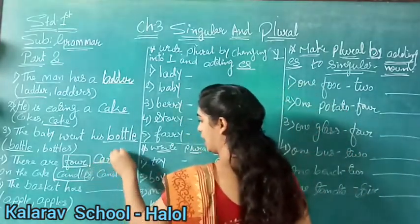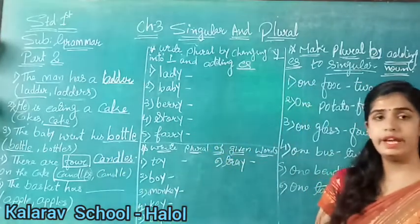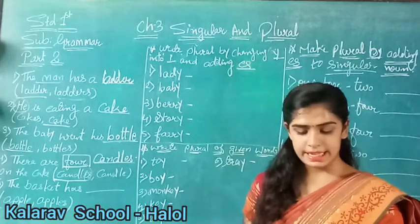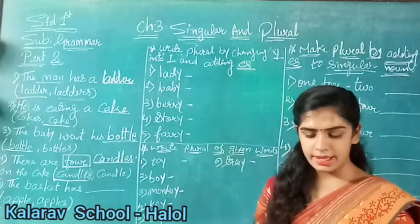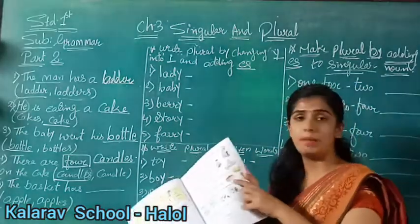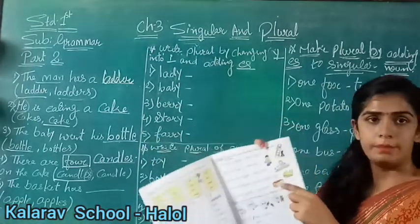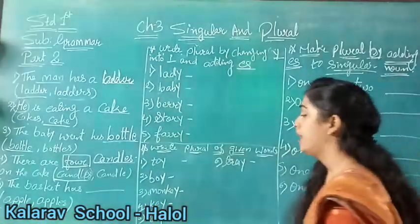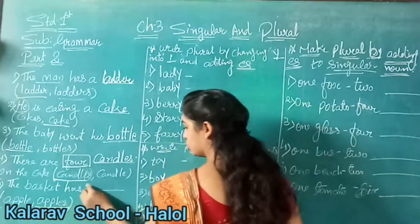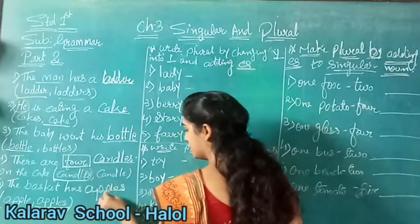So what you will write here: candles - C-A-N-D-L-E-S. Do you understand? Now see: 'The basket has blank' - apple or apples. You can see in the basket there are so many apples. So we will write here apples. This is plural because there are so many apples.